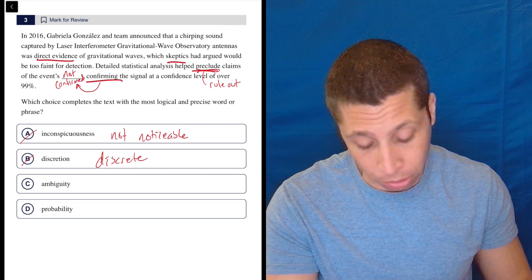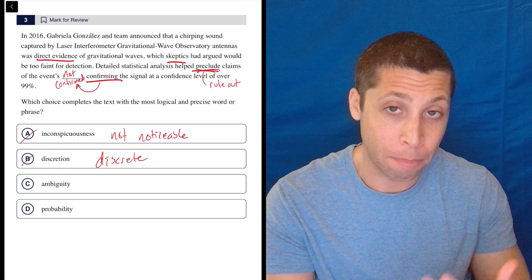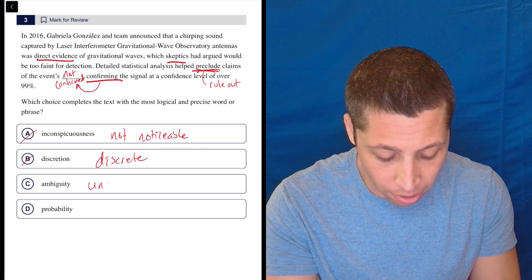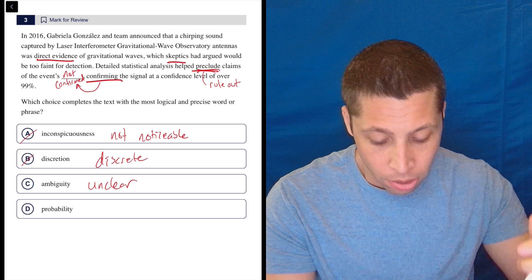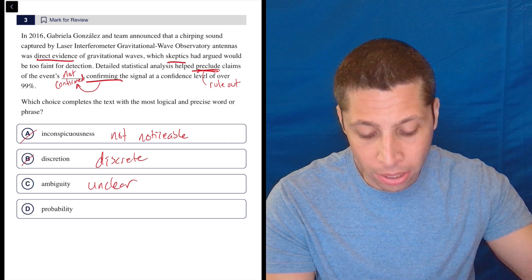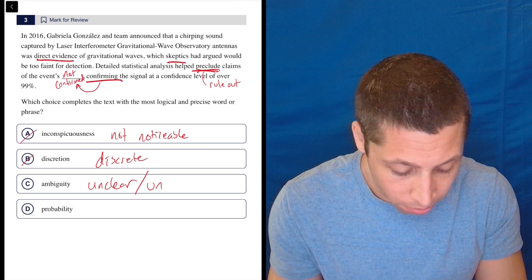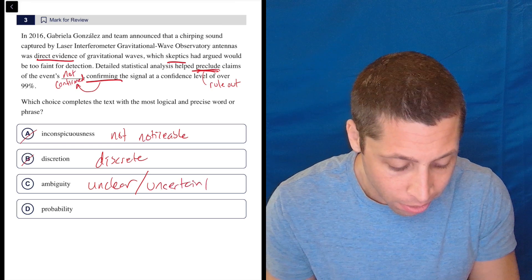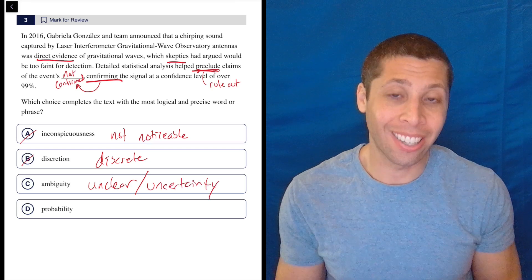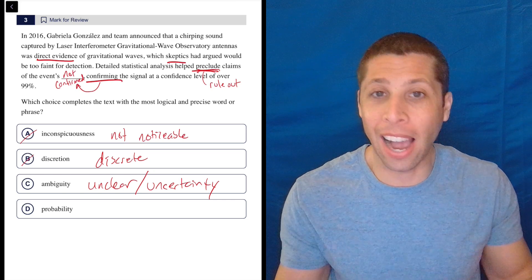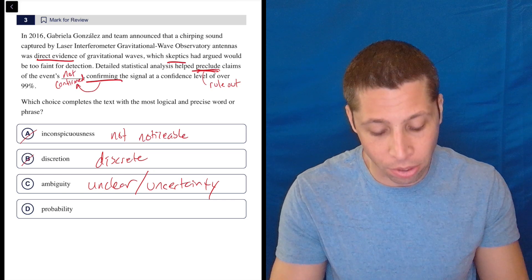Ambiguity is one of those words you've got to know. It comes from ambiguous, which is maybe a more common version. If something is ambiguous, it's unclear. So we're ruling out it being not confirmed. If it's not confirmed, it's unclear, it's uncertain. So that's what ambiguity is - it's uncertainty. And if something is not confirmed, that's perfect. There's uncertainty about whether it's real or not. So this seems really good.